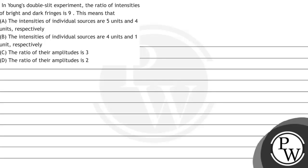Hello, let's see the question. The question given is: in Young's double-slit experiment, the ratio of intensities of bright and dark fringes is 9. Option A says the intensities of individual sources are 5 units and 4 units respectively. Option B says the intensities of individual sources are 4 units and 1 unit respectively. Option C says the ratio of amplitudes is 3, and option D says the ratio of amplitudes is 2.